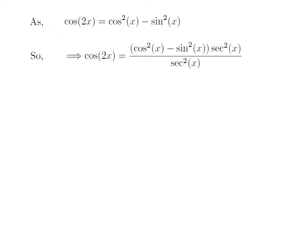Multiplying the numerator and the denominator of a fraction by a constant or an expression doesn't change the value of the fraction. Here I have multiplied the numerator and the denominator by the square of secant of x, so the expression became: cosine of 2x is equal to the quantity (square of cosine of x minus square of sine of x) times square of secant of x, divided by square of secant of x.